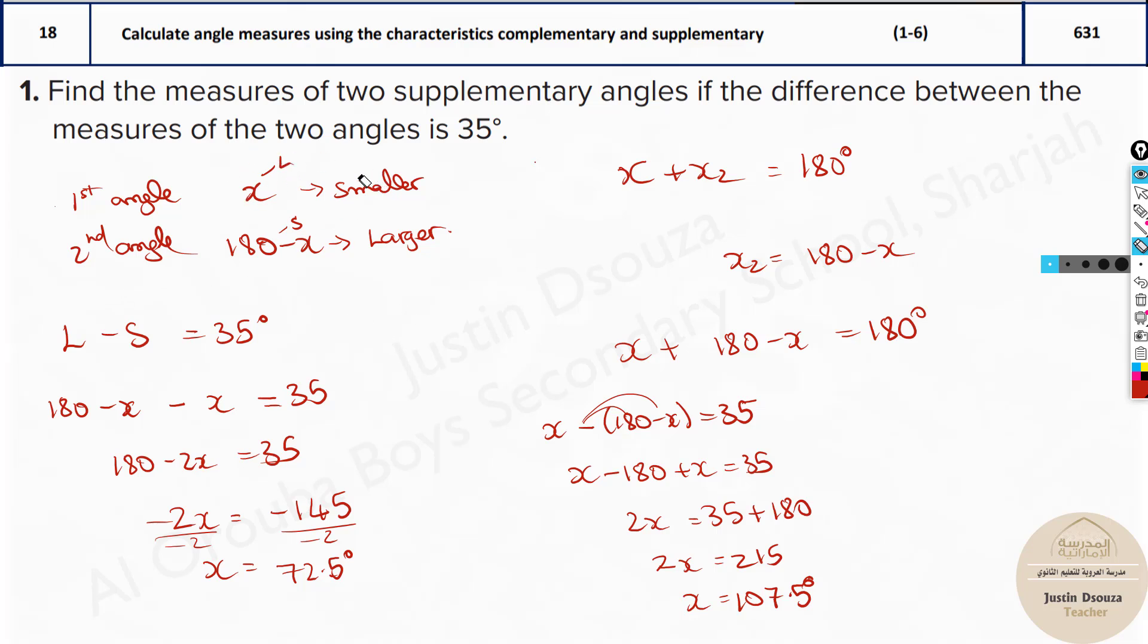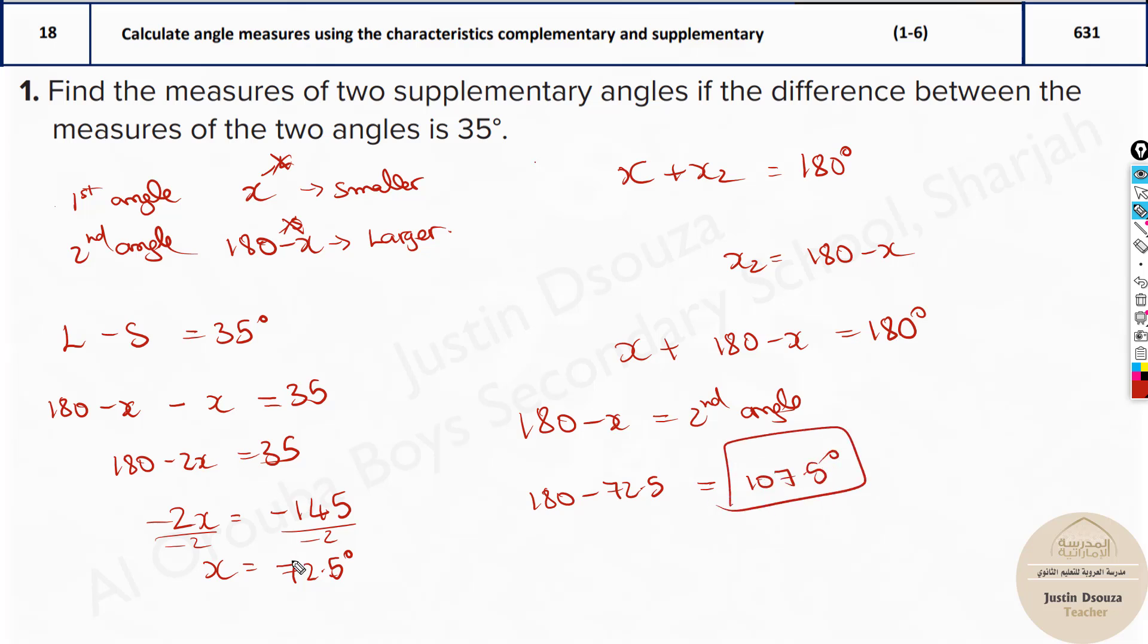I hope this part is clear. You can use anything, but always try to take x as smaller and use the first method I did because you will not have the issue of multiplying the negative sign inside the terms. Now if you have done so much, it's not over. You need to find the other angle. How you would do that is you found out x, just substitute it here. Now here you have 180 minus x. Just do 180 minus 72.5 and that will be 107.5. The answers are 72.5 and 107.5.